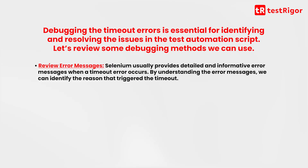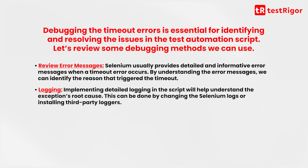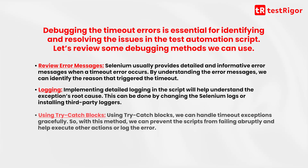Review error messages — Selenium usually provides detailed and informative error messages when a timeout error occurs. By understanding the error messages, we can identify the reason that triggered the timeout. Logging — implementing detailed logging in the script will help understand the exception's root cause. This can be done by changing the Selenium logs or installing third-party loggers. Using try-catch blocks — we can handle timeout exceptions gracefully with try-catch blocks.